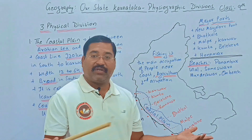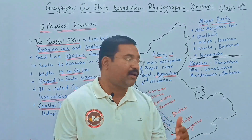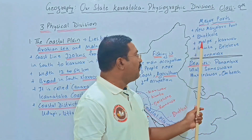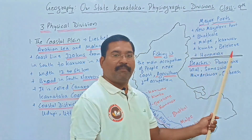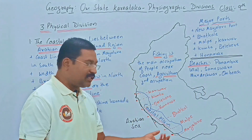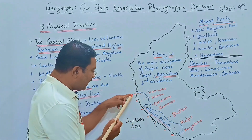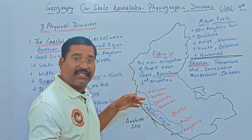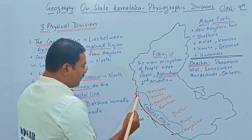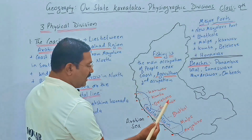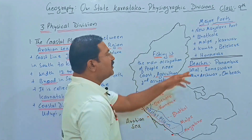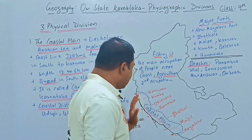Karnataka has several important ports. These include New Mangaluru Port, Bhatkal, Malpe, Karwar, Kumta, Bellikeri, and Honnavar. On the map, these ports are marked in red to make them easier to identify. From north to south: Karwar, Kumta, Bellikeri, Honnavar, Bhatkal, Malpe, and Mangaluru.